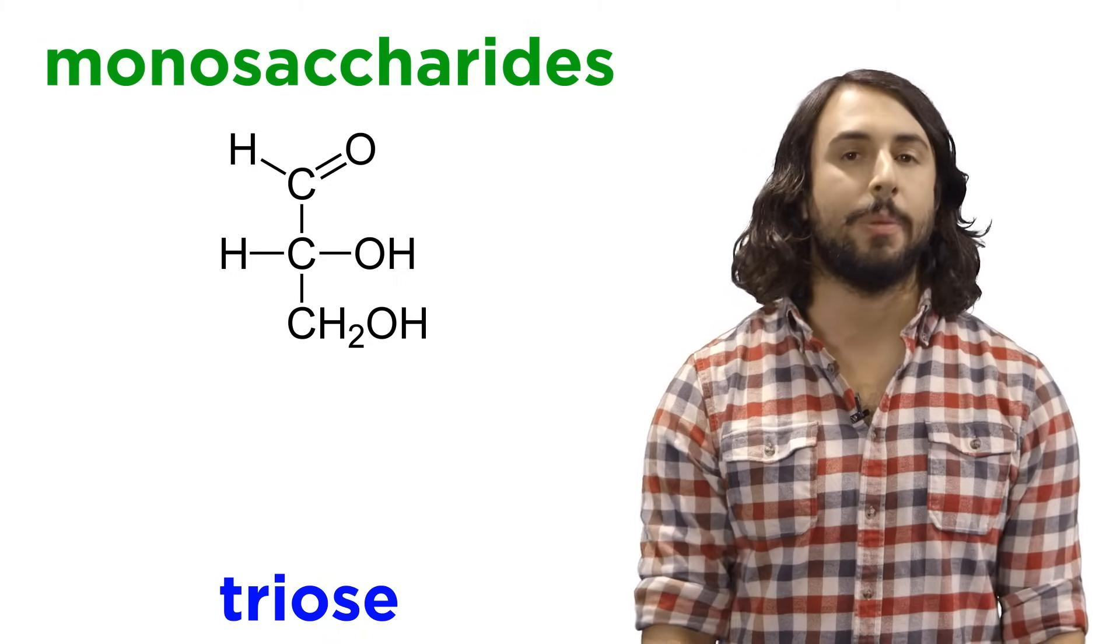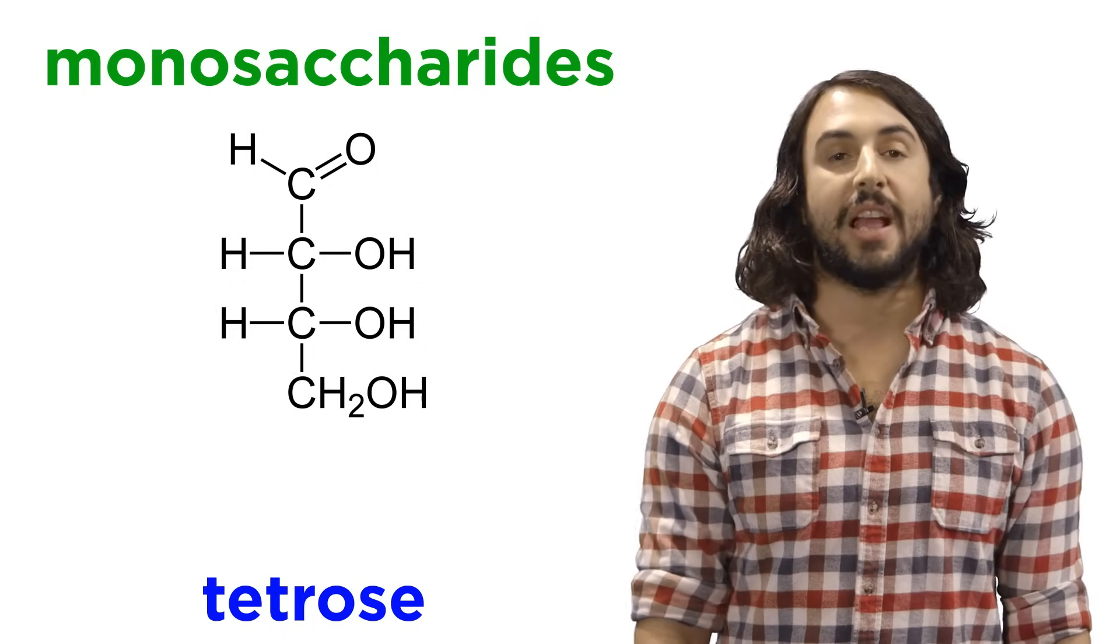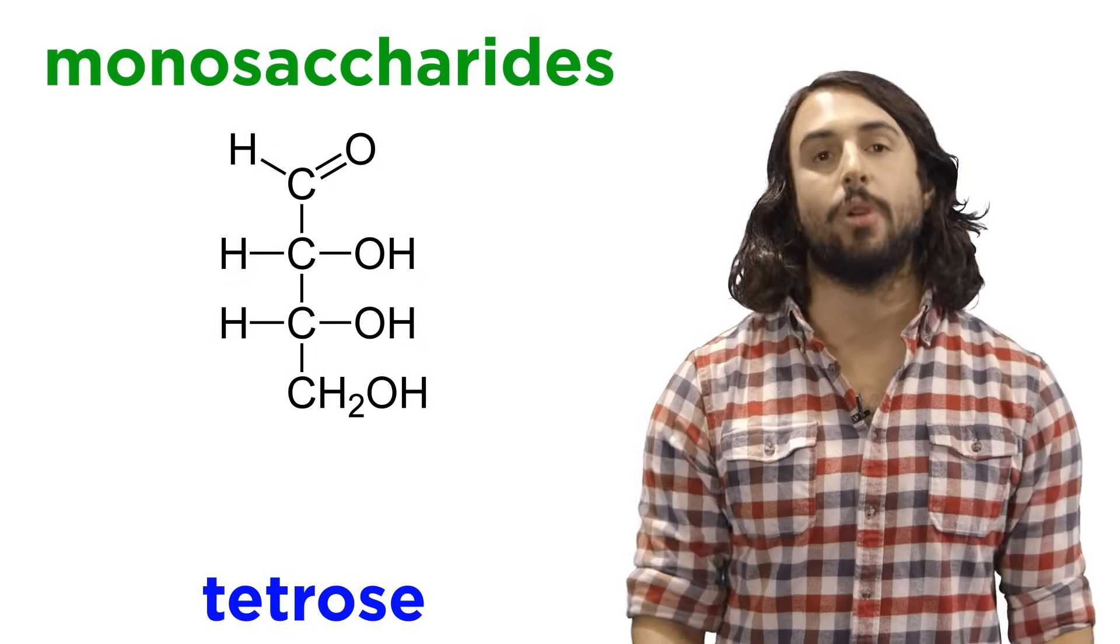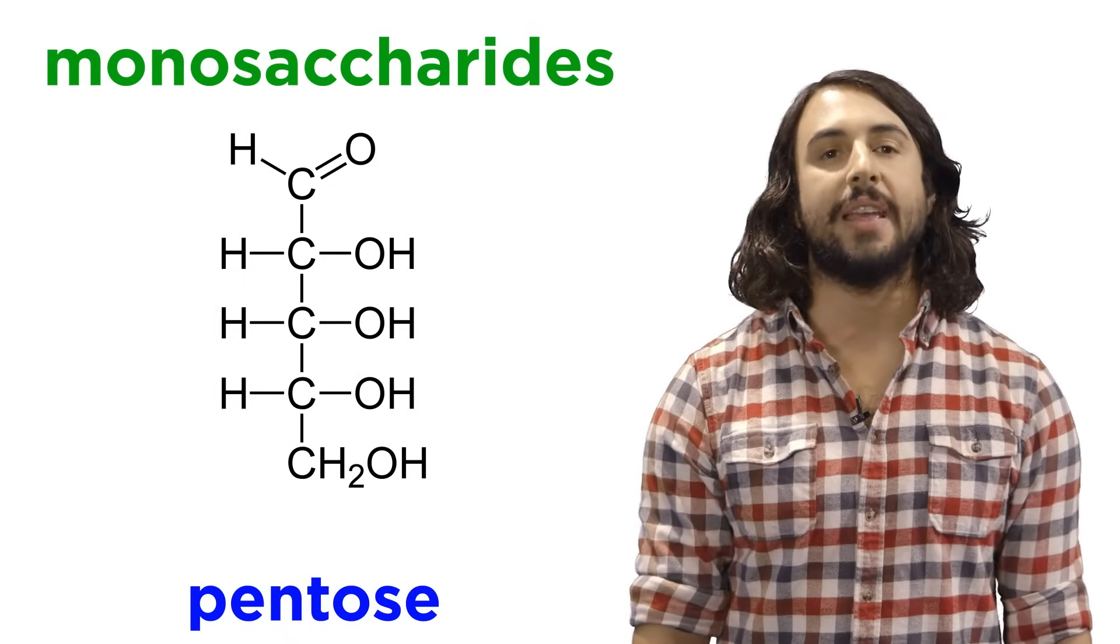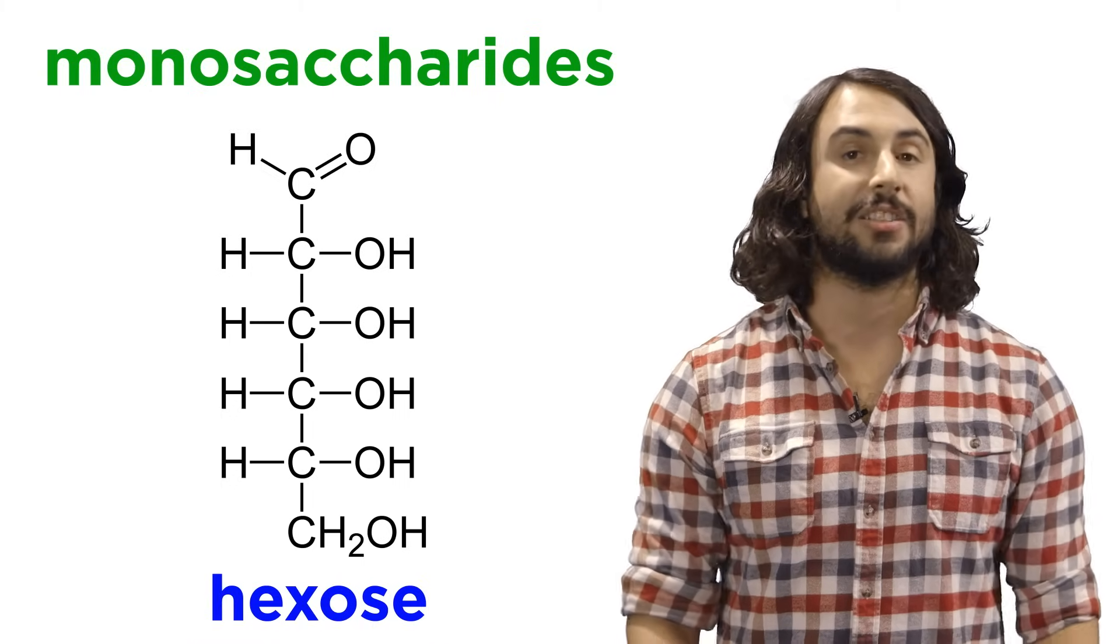So a three carbon monosaccharide would be a triose. If it has four carbon atoms, it's a tetrose. Five carbons would be a pentose, and six would be a hexose.